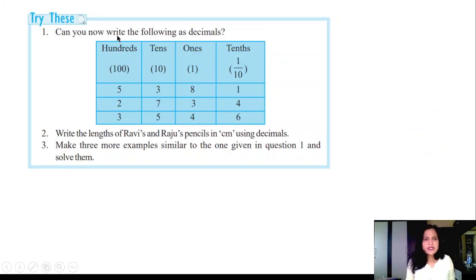Try this. Can you now write the following as decimals? It is hundreds place, tens place, H-T-O you know. Hundreds, tens, ones place, then tenths place. After that how you will write this: 538.1, this is 273.4, 354.6. Write the length of Ravi's and Raju's pencils in centimeters using decimals.